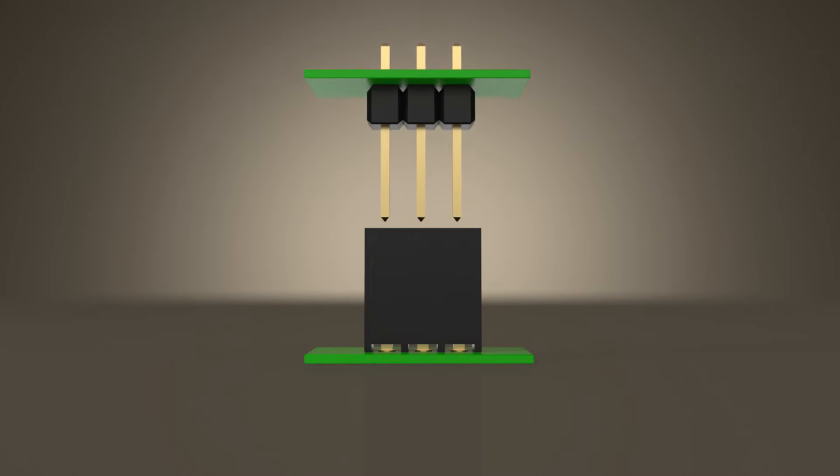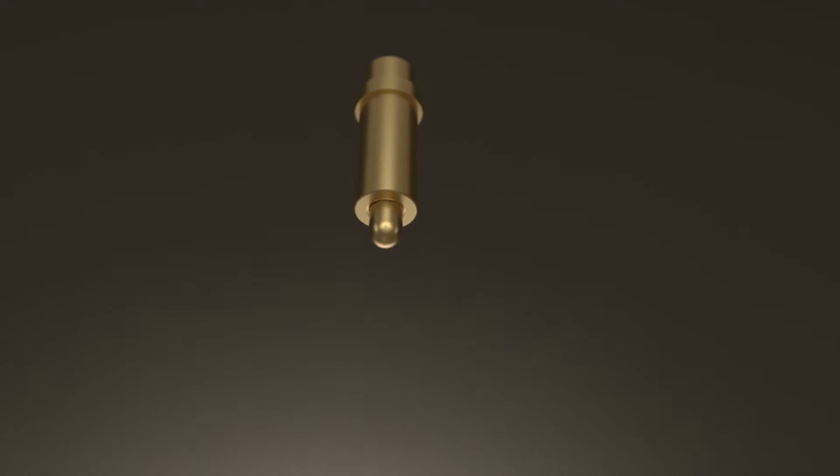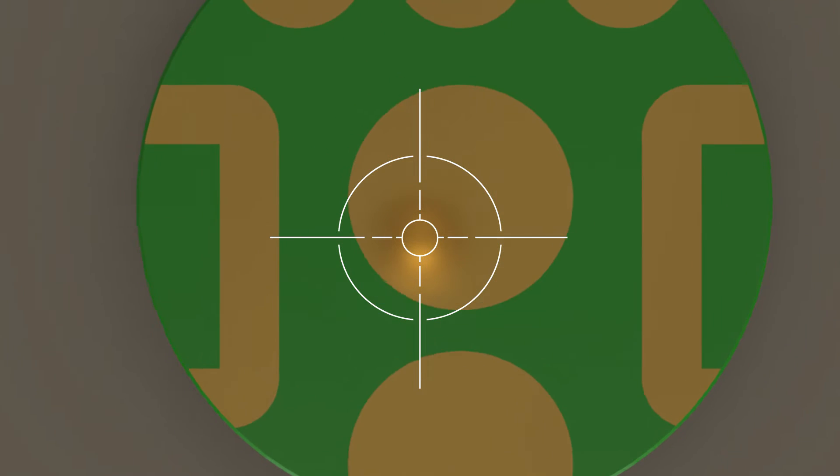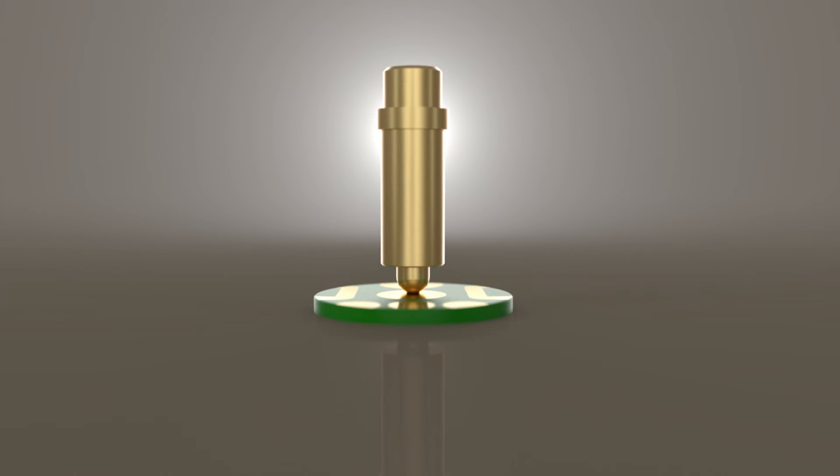Number three: Traditional male-female interconnect systems require near-perfect alignment to ensure a quality connection and minimize damage potential. Because spring-loaded pins can mate with pads on a connecting board, there is more offset tolerance. This speeds up assembly and reduces the likelihood of damage.